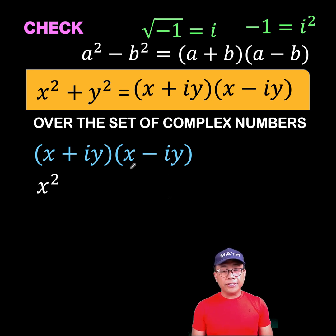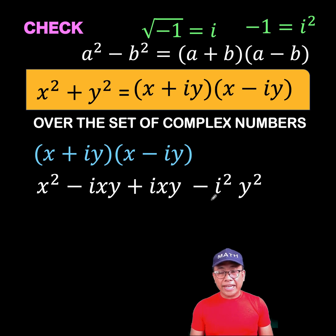the first times the first resulted to x squared. The outer times the outer is equal to negative i x y. The inner times the inner is positive i x y. And the last times the last is negative i squared y squared.